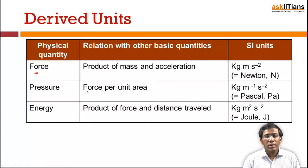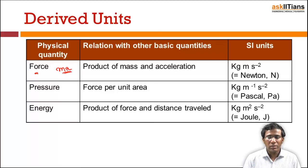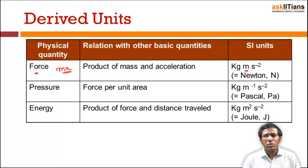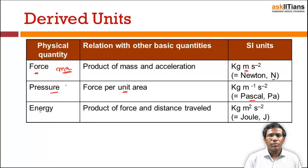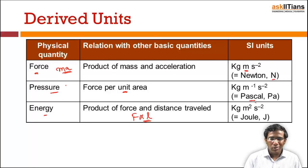Force is mass into acceleration. Mass is in kg and acceleration is meter per second squared, so force is kg·m/s², which in SI units is known as Newton (N). Pressure is force per unit area, measured in Pascals. Energy is force into distance traveled, which gives kg·m²/s², expressed in Joules.